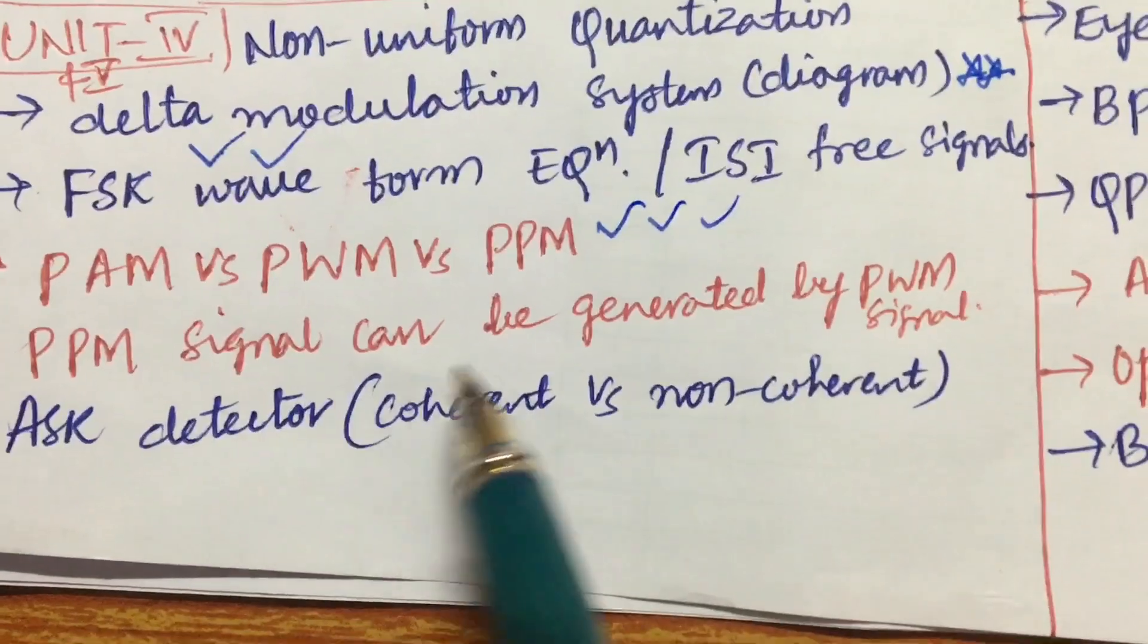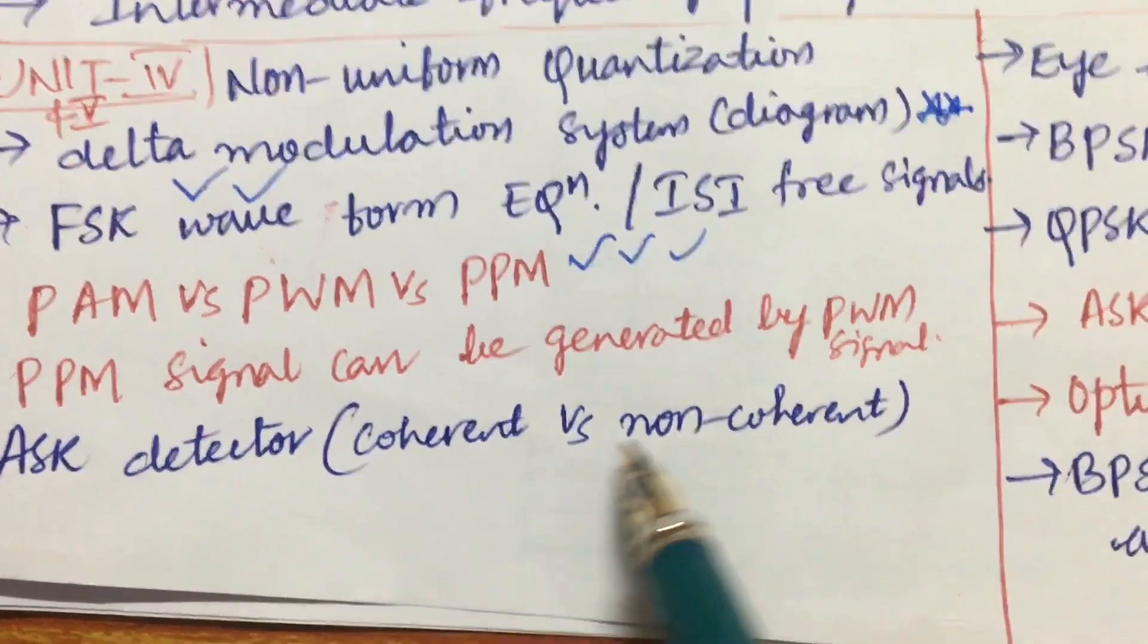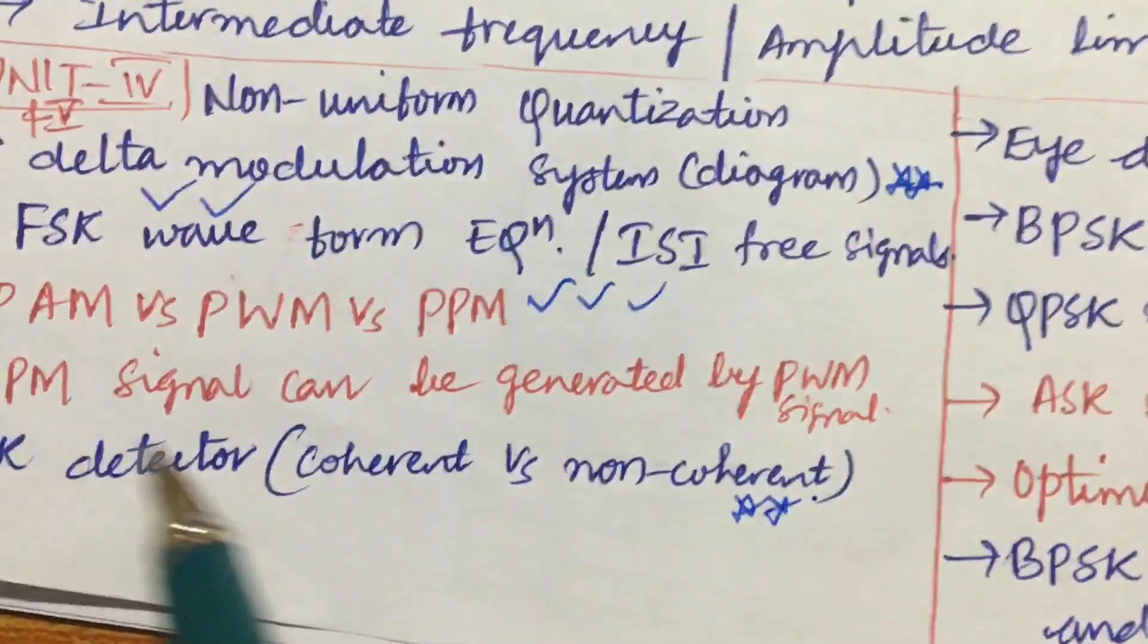And the PAM versus PWM versus PPM, the differences are asked several times. PPM signal can be generated by PWM signal, explain the term. And the ASK detector coherent versus non-coherent is also one of the very very important questions. From this part you are going to get one question, I mean the 7th question.